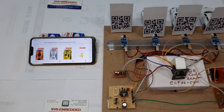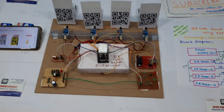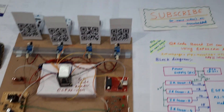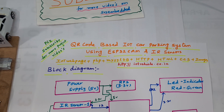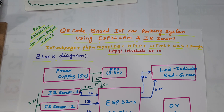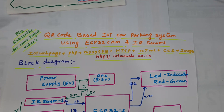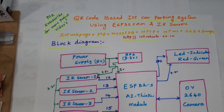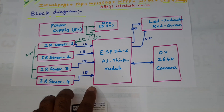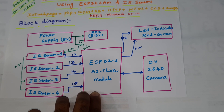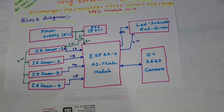Hi, we are from SVS Embedded. The project title is QR code based IoT car parking system using ESP32 cam and IR sensors. In this project we are using the ESP32 AI Thinker module and OV2640 camera.